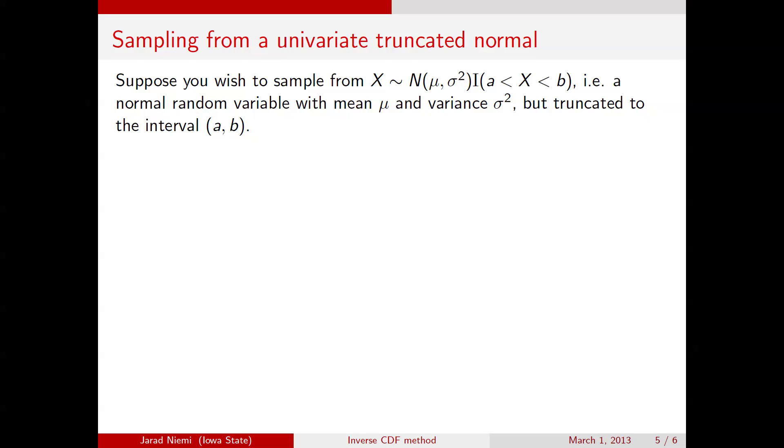So how would we do this? We're going to use the notation here, where capital phi is the standard normal CDF. Standard normal here being a normal with mean 0 and variance 1. And the first thing we do is we calculate the quantiles of the cut points a and b for a normal with mean mu and variance sigma squared. We're going to call those quantiles p_a and p_b.